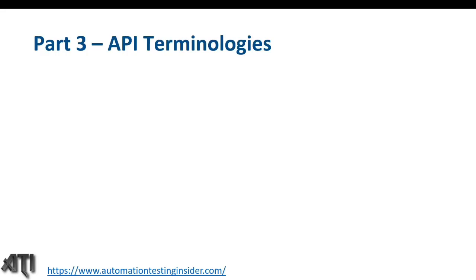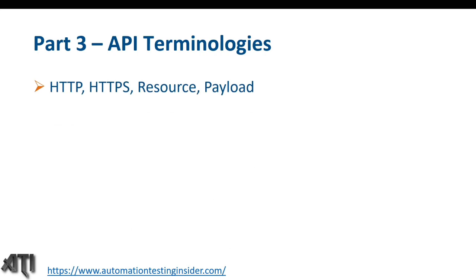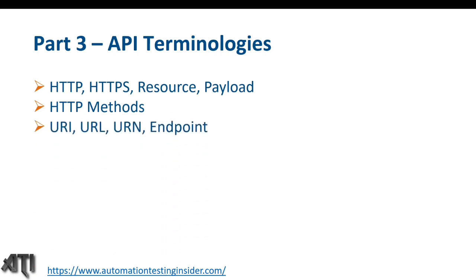Hello friends, welcome back to another video of Automation Testing Insider. This is the third part of the API testing series and today we are going to talk about different API terminologies — HTTP, HTTPS, Resource, and Payload. We'll discuss the different HTTP methods and at last we'll talk about URI, URL, URN, and Endpoint. So let's get started.